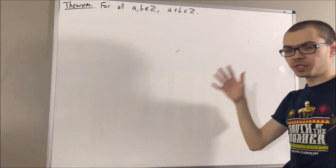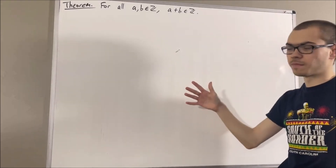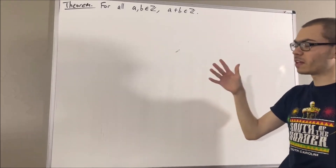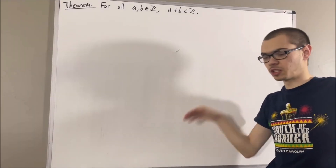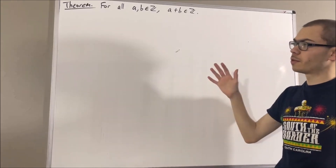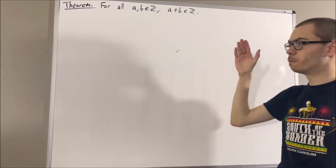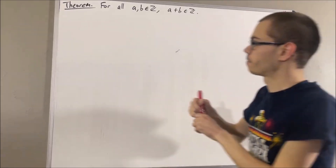In this series, we are using a list of 10 axioms for the real number system, and I'll leave that list of axioms in the description below. In proving this theorem, we are going to be using axioms 1, 2, 4, and 5.